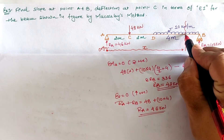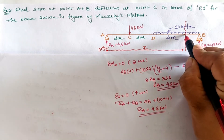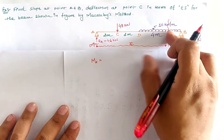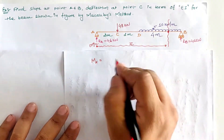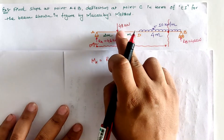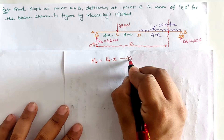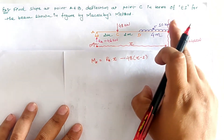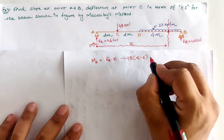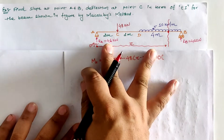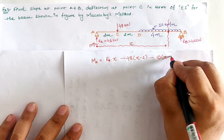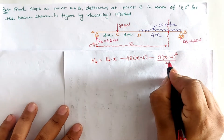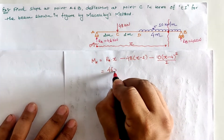We calculate the bending moment at this section. RA into x is positive (clockwise). The 48 kN point load creates an anti-clockwise moment: negative 48 into (x minus 2). The UDL creates an anti-clockwise moment: total load is 10 into (x minus 4) with CG distance (x minus 4)/2 from the section, giving negative 10/2 into (x minus 4) squared. Substituting RA as 46 gives the moment expression.